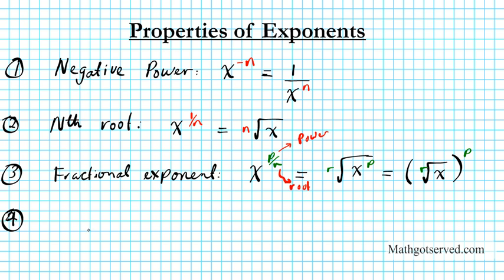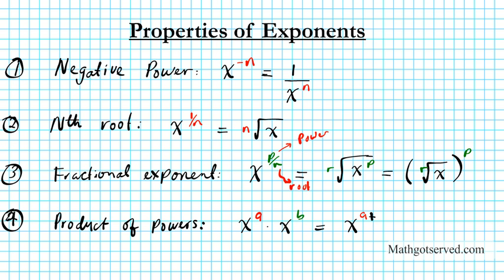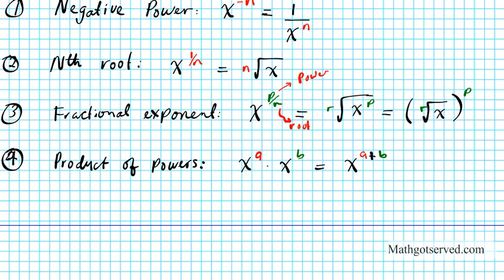Property number four is the product of powers. What do you do when you have a product of powers? If we have x to the a times x to the b, as long as the bases are the same, the property requires you to simply add the powers — so you get x to the a plus b. Anytime you have a product of powers and the bases are the same, all you have to do is add the powers.